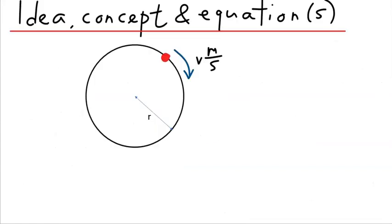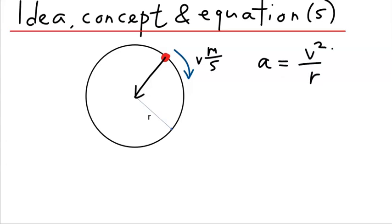Let's assume you have this object moving in uniform circular motion with a constant speed of v meters per second. We know that this object will be accelerating towards the center, and that acceleration is called the centripetal acceleration, with the expression v squared over r. This acceleration is in a radial direction, namely pointing towards the center.